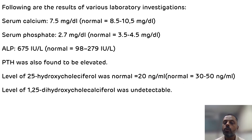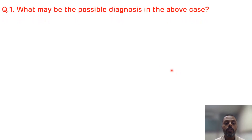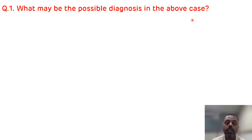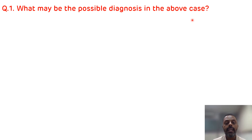The first question is: what may be the possible diagnosis in the above case? From the description, we can say that the child is suffering from rickets, based on the various clinical findings as well as the investigations. This rickets occurs due to the deficiency of vitamin D. Vitamin D deficiency causes rickets, and if rickets occur before the fusion of epiphyseal plates, it results in growth retardation and various kinds of bone deformities.